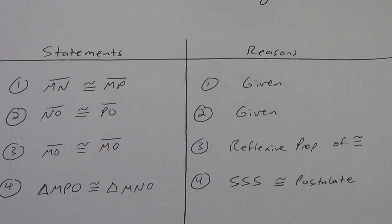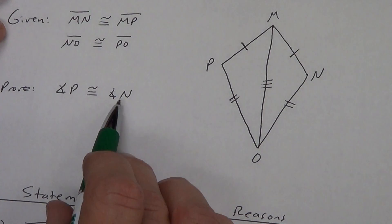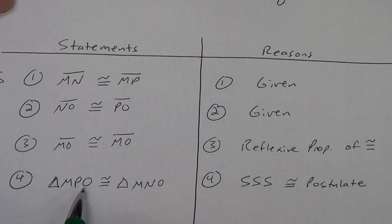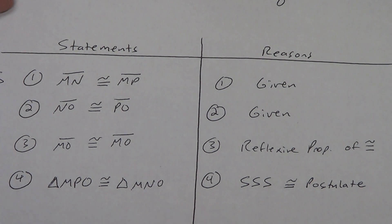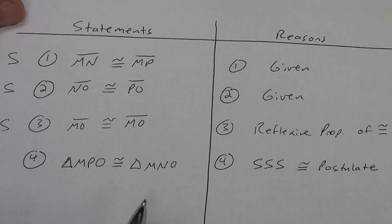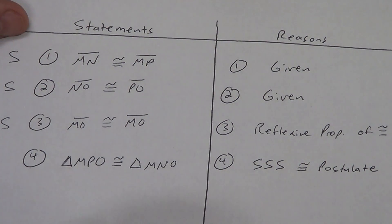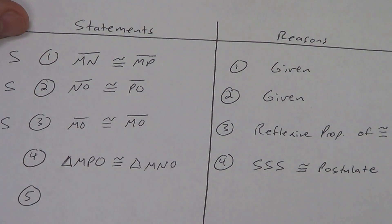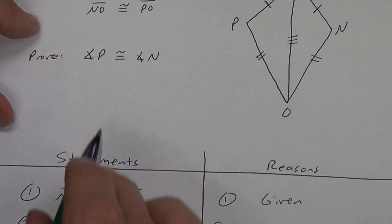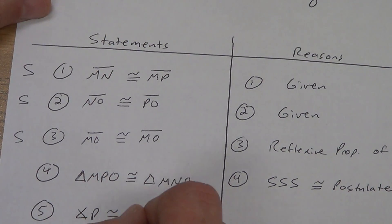Now we're going to use this 4.7 thing — CPCTC. Angle P right there in the middle, angle N right there in the middle. They're in the same position — they're corresponding. Corresponding parts — these parts just happen to be angles, but parts can be sides or angles. Corresponding parts of congruent triangles are congruent. Yes, I proved the triangles were congruent, so we know the corresponding parts also have to be congruent.